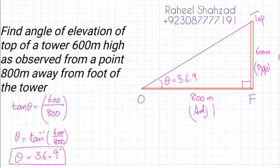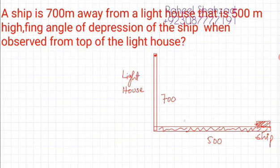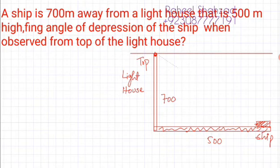Here is another question on angle of depression. A ship is 500 meters away from a lighthouse that is 700 meters high. We need to find the angle of depression of the ship when observed from the top of the lighthouse. From the top of the lighthouse, we draw a straight line parallel to the ground — this is the level line.